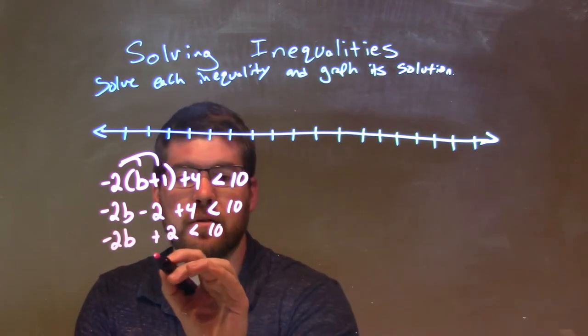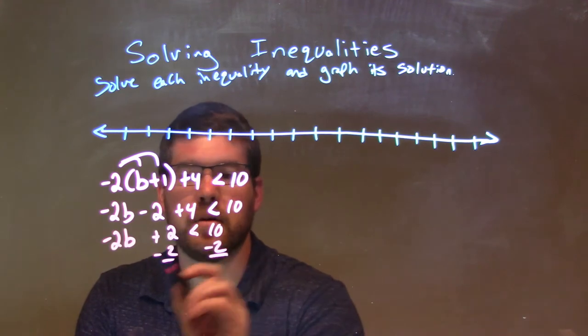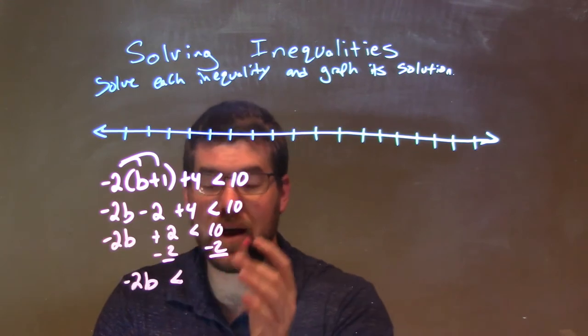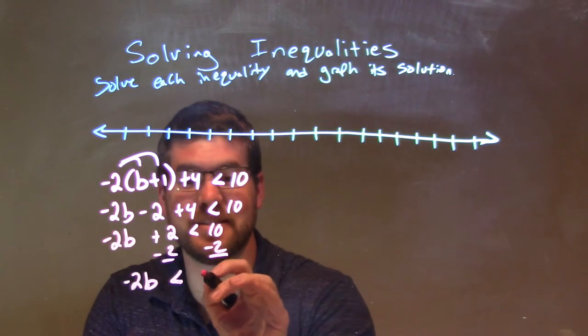We now can subtract the 2 from both sides, leaving negative 2b is less than, well, 10 minus 2 is just 8.